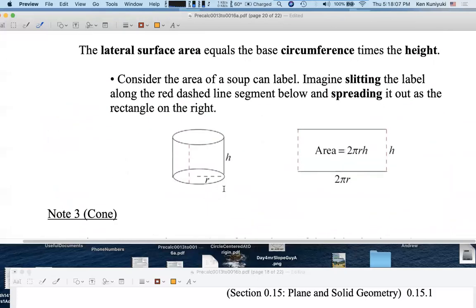For a cylinder, like the lateral surface area for a cylinder, imagine this. Imagine a soup can with a label around it. Imagine slitting the label perpendicularly to the base. Spread out the label, and you get a rectangle. The distance around that circle, that circumference, becomes the base of the rectangle, 2 pi r. The height is still h. The area of the rectangle is 2 pi r h, and that is the lateral surface area for the cylinder.